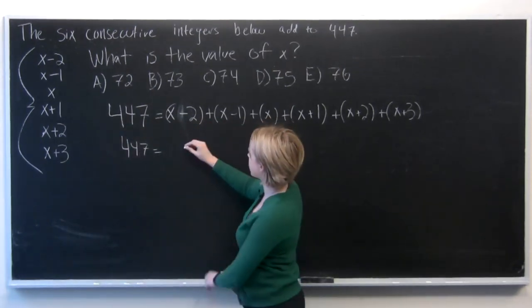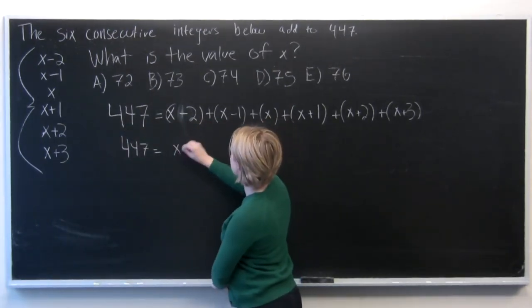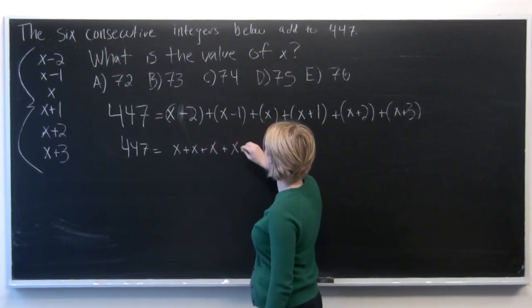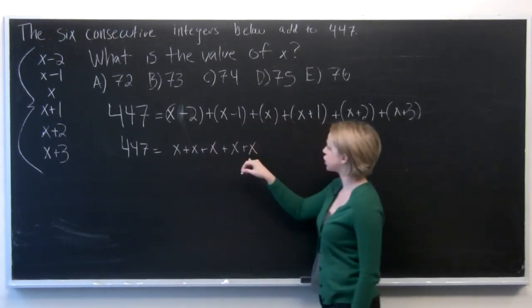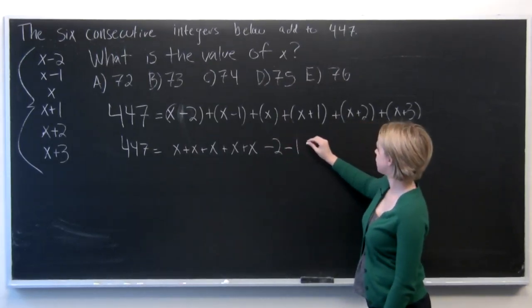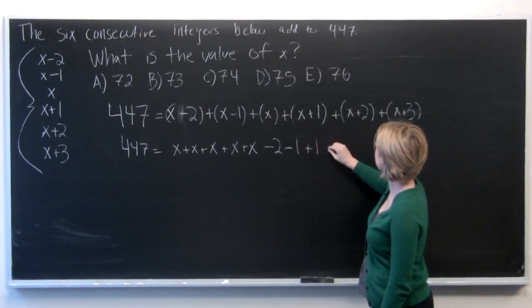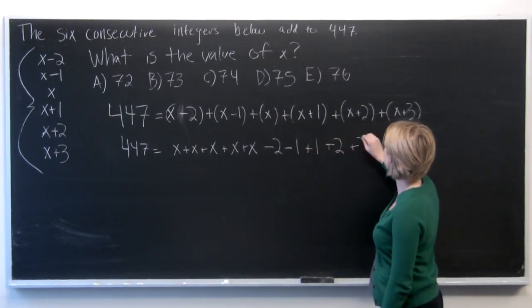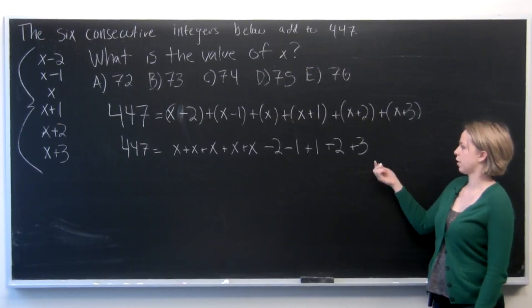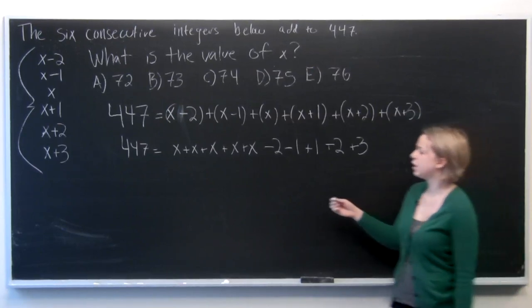So we've got 447 again equals our 6x terms and our other terms in the equation. And so the next thing we're going to do is combine the like terms.